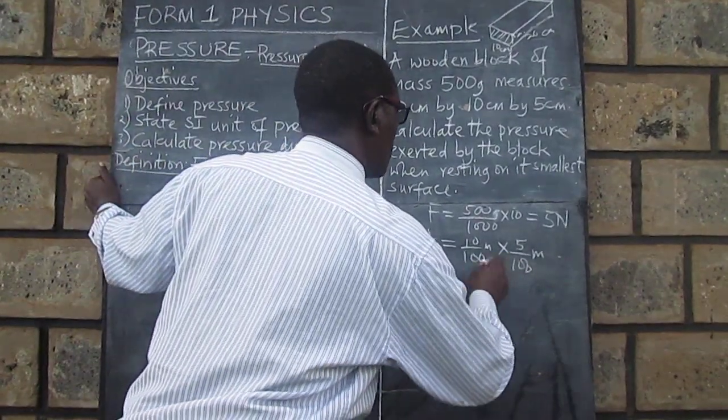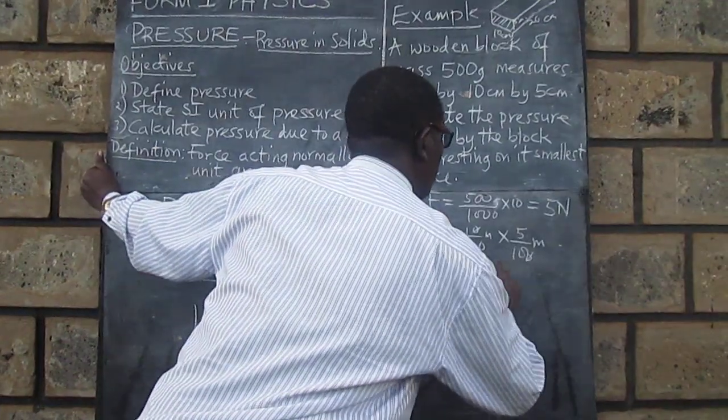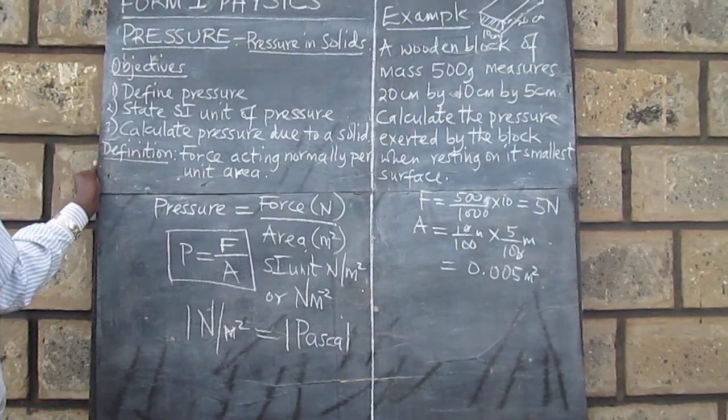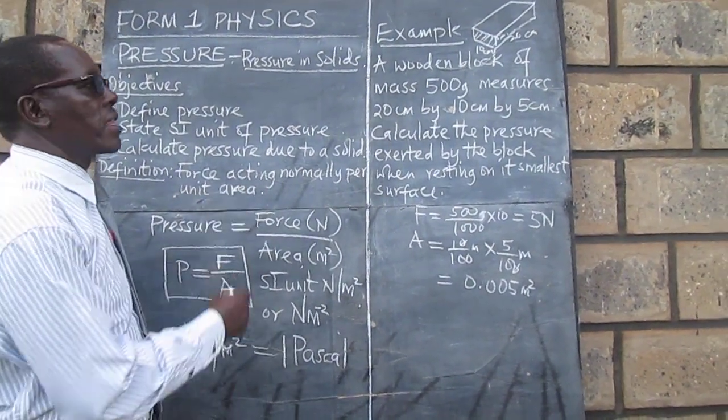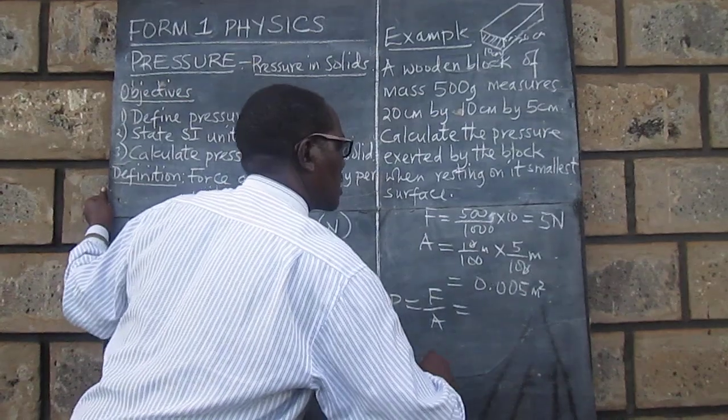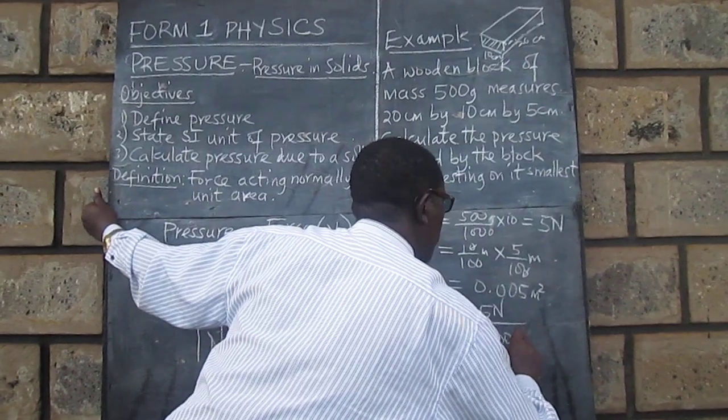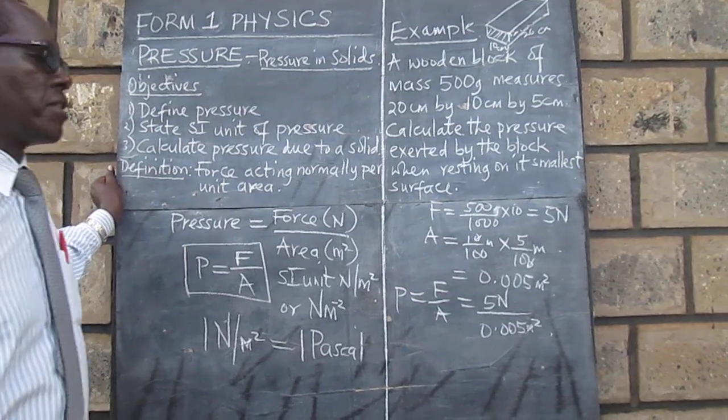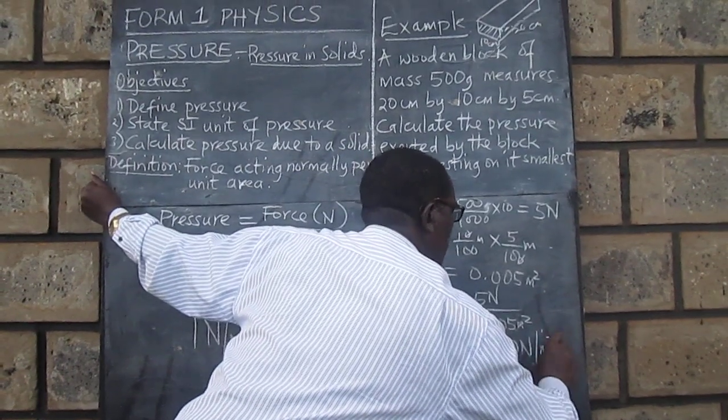This is 50 over 10,000. That is 5 divided by 1000. So we can have it as 0.005 square meters. So it is possible now for us to work out the pressure exerted by this block. From the formula we have force over area. This is going to give us 5 Newtons divided by 0.005 square meters. And this will finally give us 1000 Newtons per meter squared.